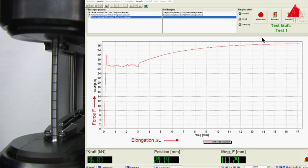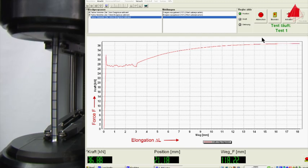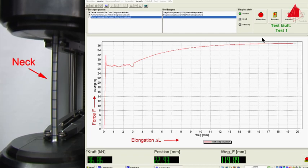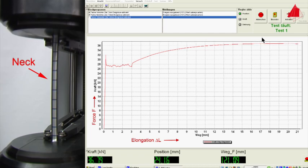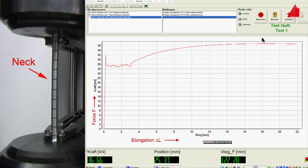As soon as the maximum force is reached, a neck begins to form at one point of the test piece. All further plastic deformation now only takes place at the neck, and eventually the test piece fractures there.